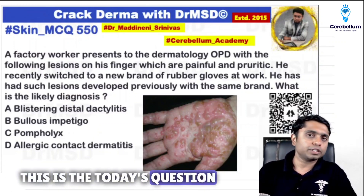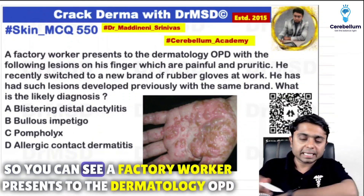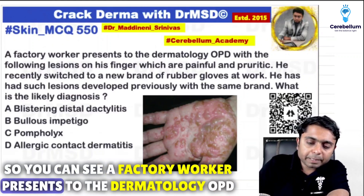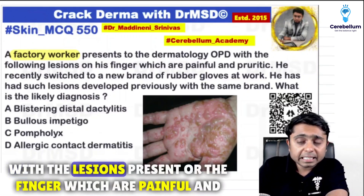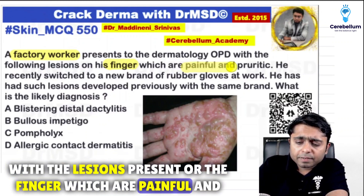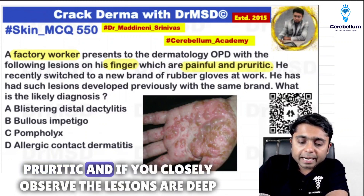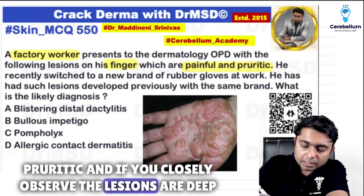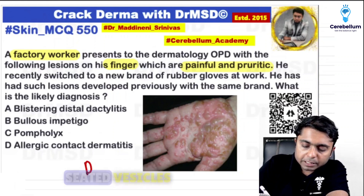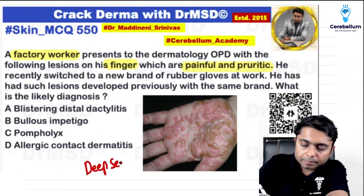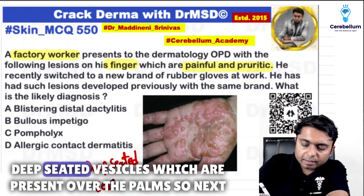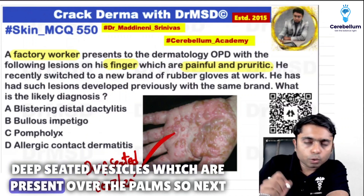This is today's question. A factory worker presents to the dermatology OPD with lesions present over the fingers which are painful and pruritic. If you closely observe, the lesions are deep seated vesicles present over the palms.